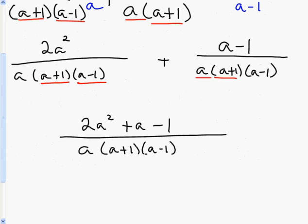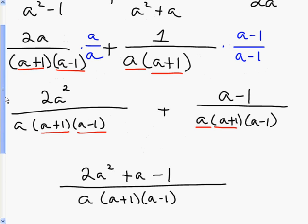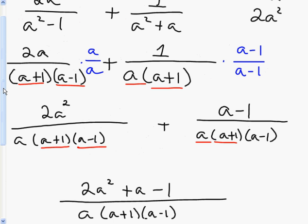The steps never change. You get your LCM every single time, then see what you're missing in each fraction. My first fraction was missing a, my second fraction was missing (a-1), so I multiply numerator and denominator by that value — essentially multiplying by 1. The denominators are already built as a(a+1)(a-1), and I multiply out the numerators: 2a times a gives 2a², and 1 times (a-1) gives a-1.